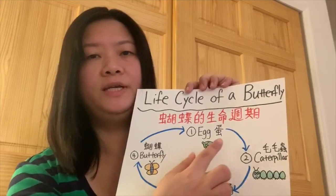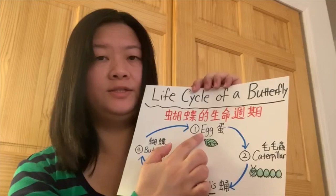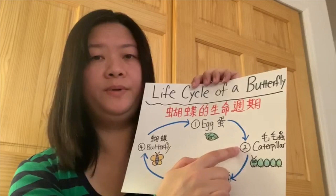Okay, first, butterfly lays eggs on a leaf. And then it becomes number two — it becomes a caterpillar. 毛毛蟲。